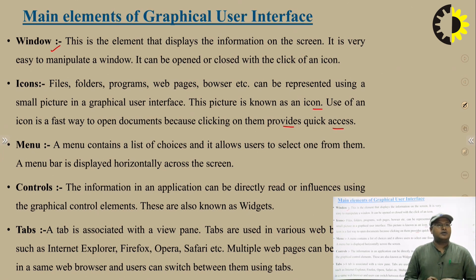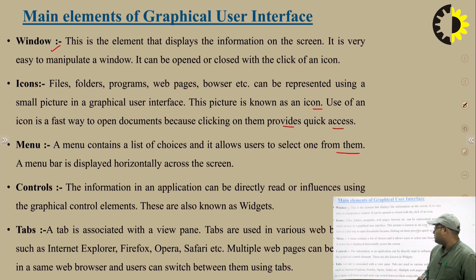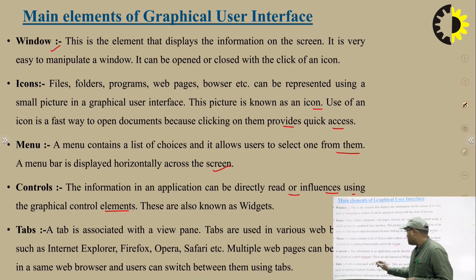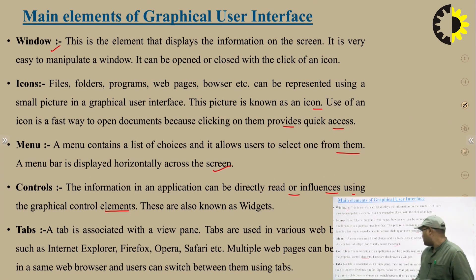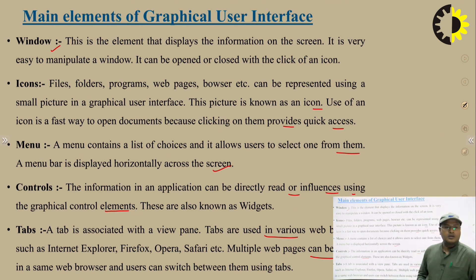Menu: a menu contains a list of choices and allows the user to select one from them. A menu bar is displayed horizontally across the screen. Controls: information in an application can be directly read or influenced using graphical control elements, also known as widgets. Tab: a tab is associated with a view pane. Tabs are used in various web browsers such as Internet Explorer, Firefox, Opera, Safari, etc. Multiple web pages can be opened in the same web browser and the user can switch between them using tabs.